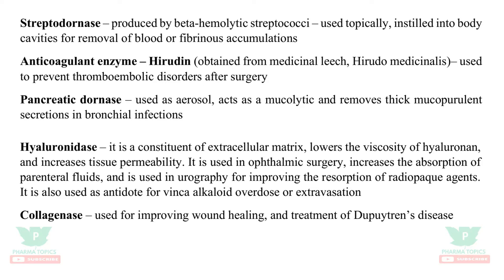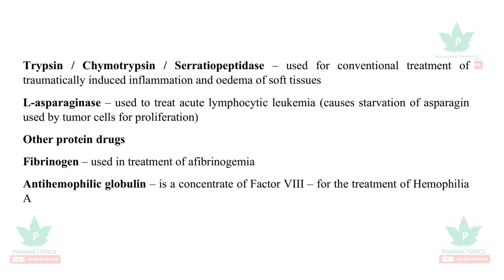Hirudin is an anticoagulant enzyme used to prevent thromboembolic disorders after surgery. Pancreatic dornase is used as an aerosol — it acts as a mucolytic and removes thick mucopurulent secretions in the bronchial tract. Hyaluronidase is used in ophthalmic surgery, increases absorption of parenteral fluids, used in urography, reduces viscosity of hyaluronan, and increases tissue permeability of administered drugs. Collagenase is used to improve healing and treatment of Dupuytren's disease. Trypsin, chymotrypsin, and serratiopeptidase are used for treatment of traumatically induced inflammation and edema of soft tissues. L-asparaginase is an anti-cancer drug used to treat acute lymphocytic leukemia.